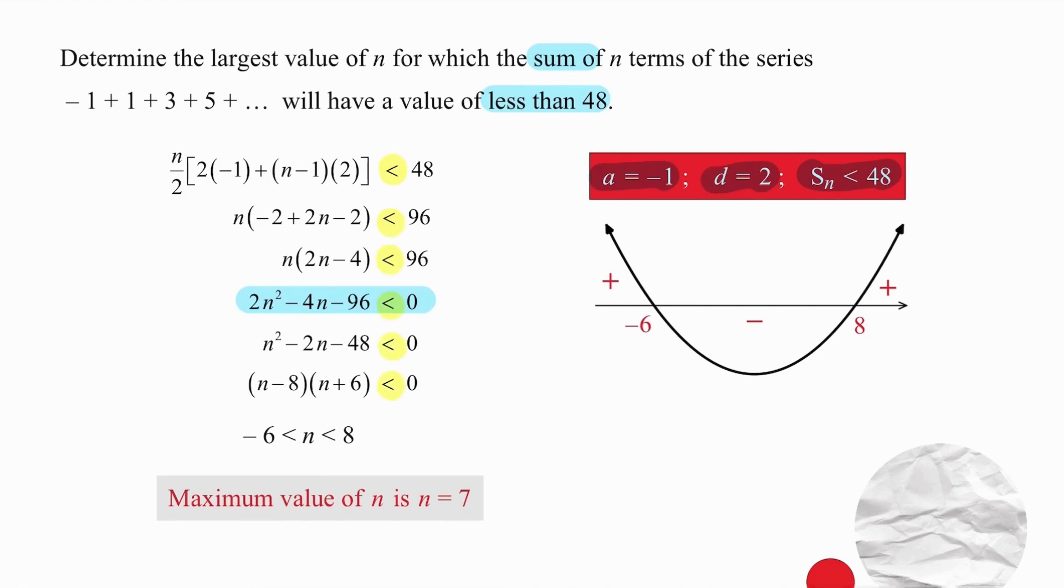So as long as you keep your head, there's no need to be anxious about an inequality. Dividing by two makes this easier to factorize and our factors are n minus eight and n plus six. The product of those two values must be negative for us to be able to find a sum that is less than 48. We're going to draw an understanding of the parabola graph, knowing that this would be a smiley parabola because the coefficient of n squared is positive. We also know that we must produce negative results. So we ignore what's happening on the far left and we ignore what's happening on the far right because they produce positive results.